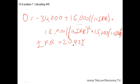For the financial calculator, you just input the values. The initial cash flow, CF0, is minus $34,000. The cash flow for year one is $16,000, year two is $18,000, and year three is $15,000. Then you calculate the internal rate of return, which gives you an answer of 20.97%.